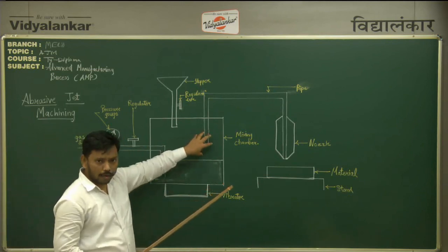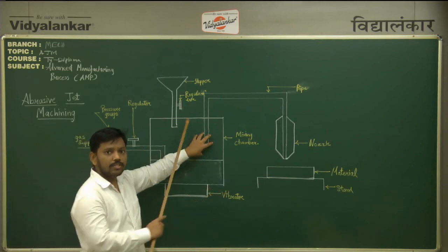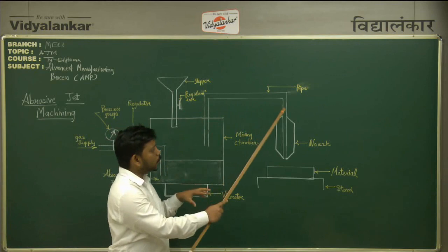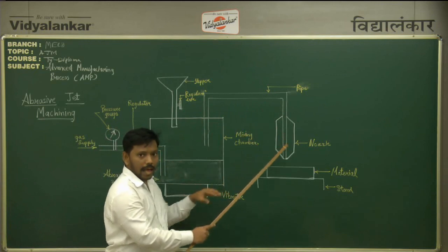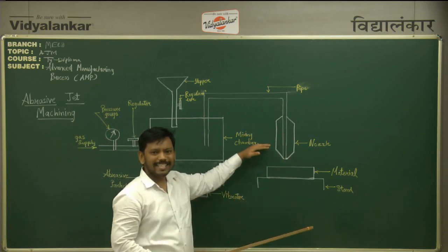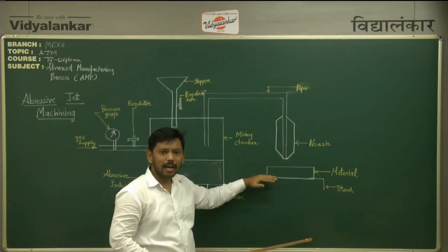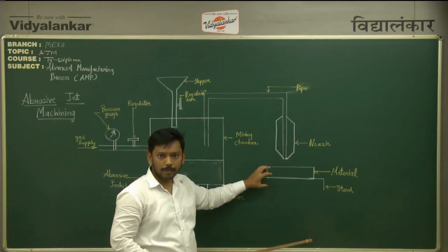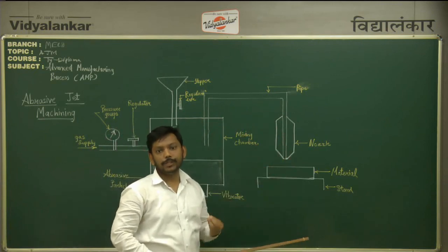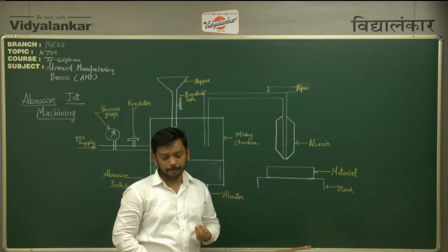Then we have an outlet pipe which is connected to a nozzle, and this nozzle is kept directly above the workpiece on which machining has to be done.